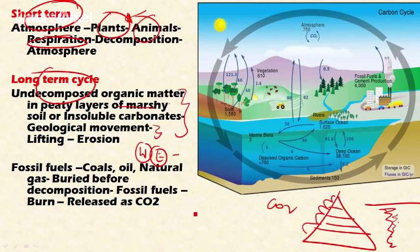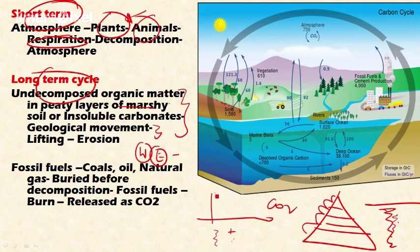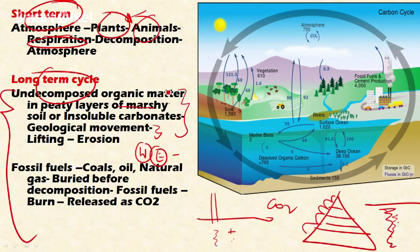This is called the long-term cycle. Other carbon sources — coal, oil, and natural gas — are formed due to the burial of undecomposed organic matter in the Earth millions of years ago. Because of higher pressure, temperature, and geomorphological factors, this matter converted into fossil fuels. Carbon re-enters the cycle only when fossil fuels are extracted and burned, releasing carbon dioxide into the atmosphere. This cycle takes millions of years to complete, hence it is called the long-term cycle.